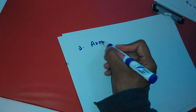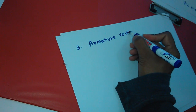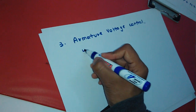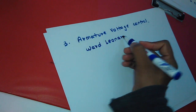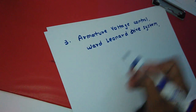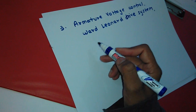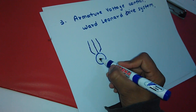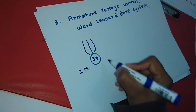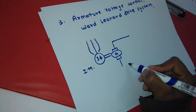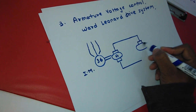The third method is armature voltage control. From this method, the supply voltage can be changed so that speed will be changed. This is done by using the Ward Leonard drive system. For this we require a motor-generator set to control the speed of the motor. A three-phase induction motor is coupled to a DC generator, and that DC generator is again connected directly to the motor whose speed control we need.